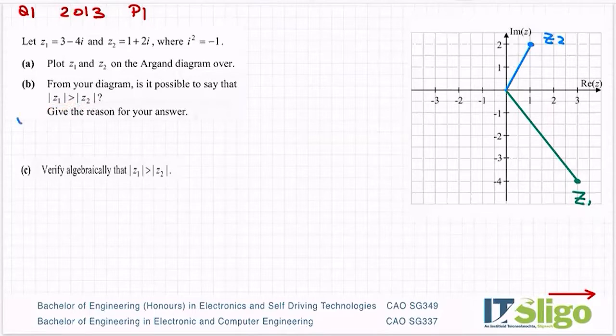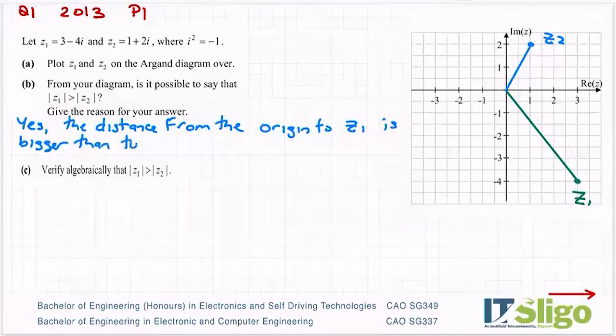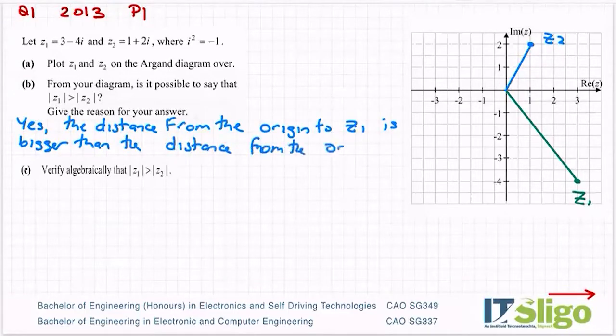So now is it possible to say that the distance from the origin to z1 is greater than the distance from the origin to z2? Well, yes. The distance from the origin to z1 is bigger than the distance to z2.